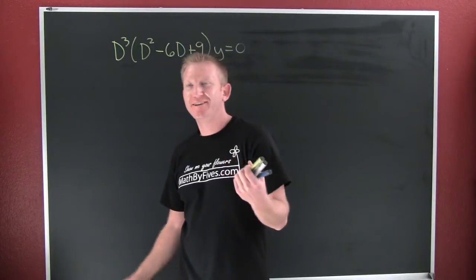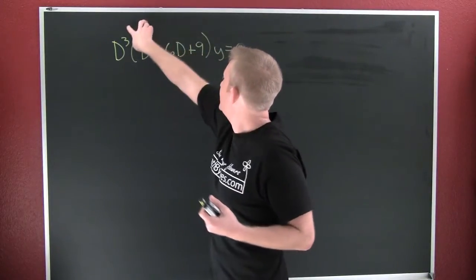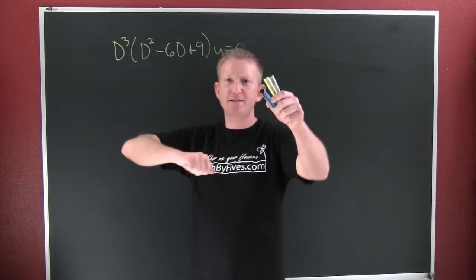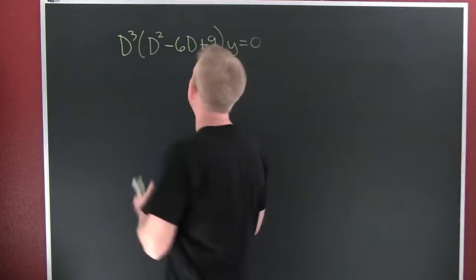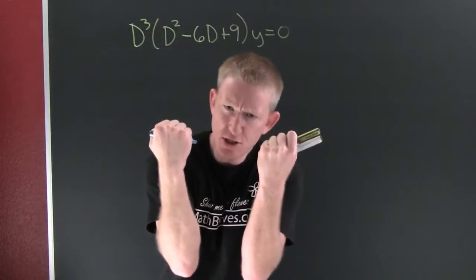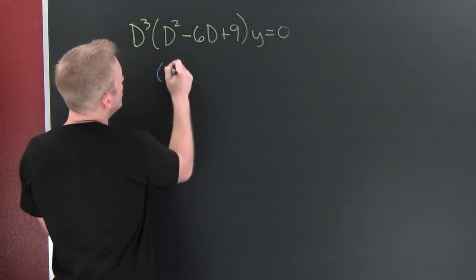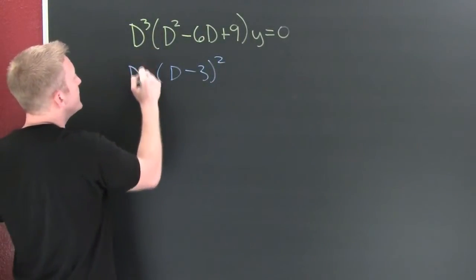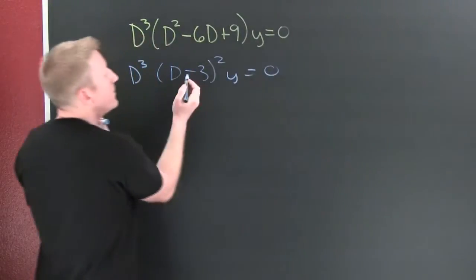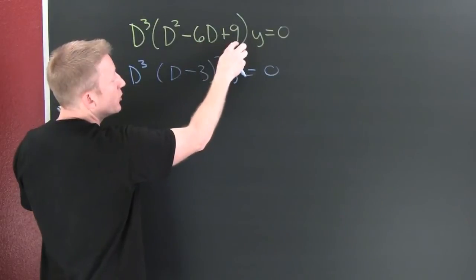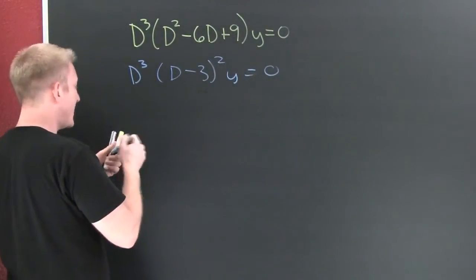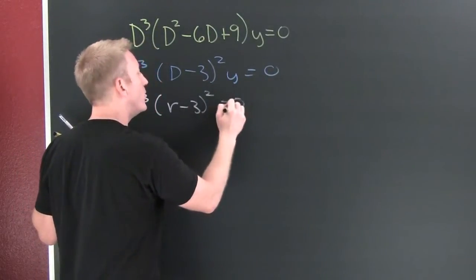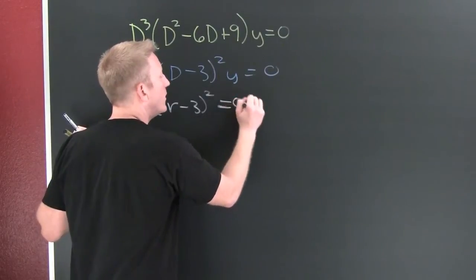For our next trick, we'll do a linear homogeneous fifth degree differential equation, already written with operator notation. This one's going to have repeated roots — it's big, it's bad. It factors as a perfect square: this is (D minus 3) squared, and then D cubed, times y equals zero. These are operators acting on y with constant coefficients, so the characteristic polynomial is r cubed times (r minus 3) squared equals zero.